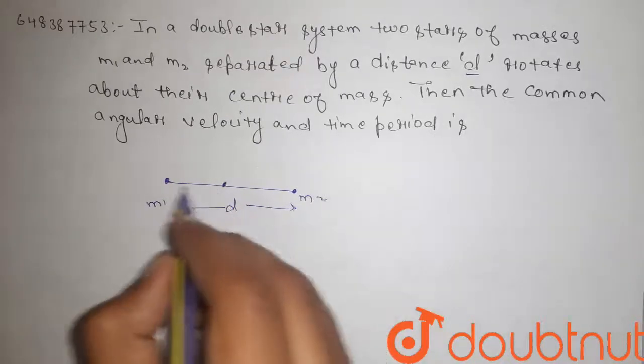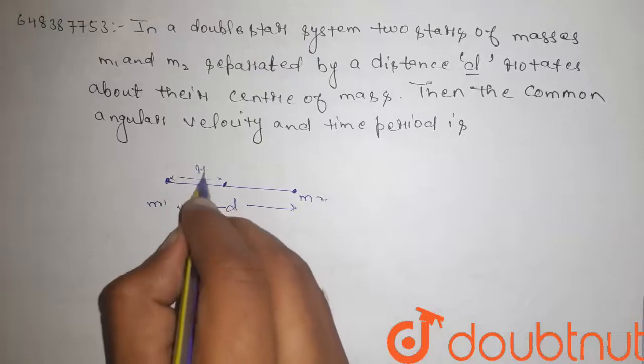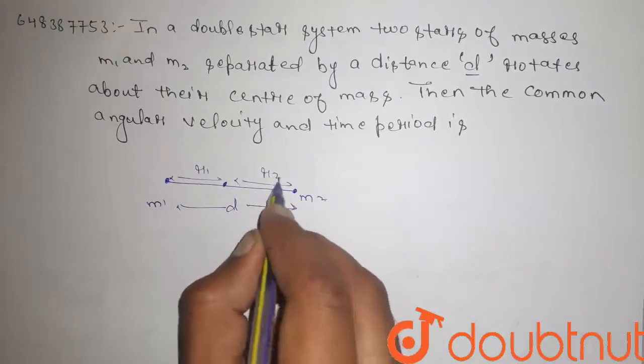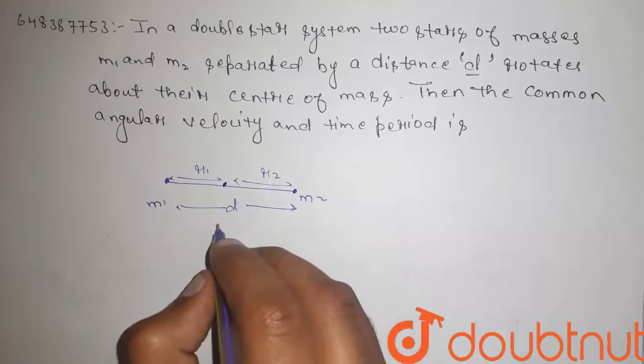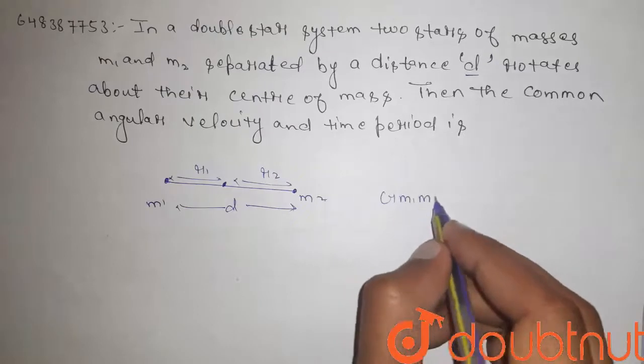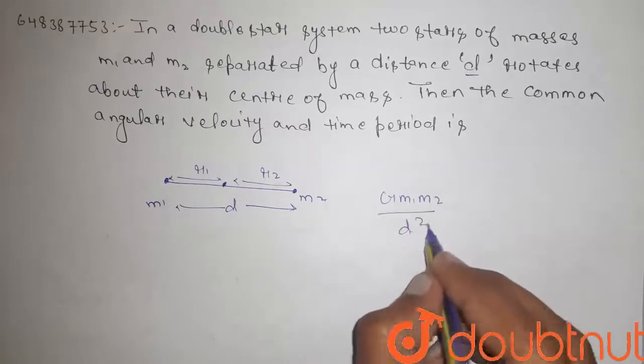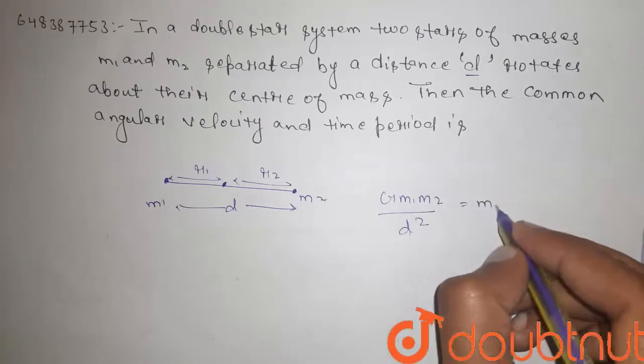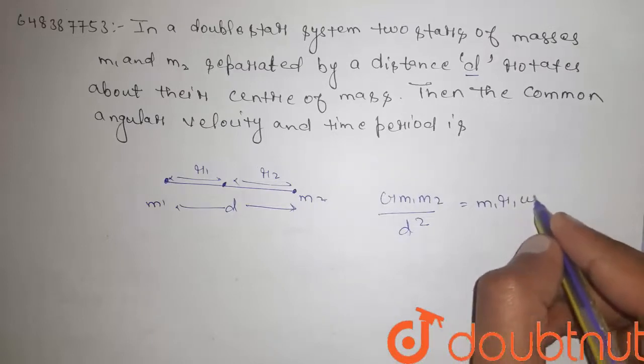Here is the center of mass. r1 is this distance, this is distance r2. So the gravitational force between the masses provides the necessary centripetal force. That is G m1 m2 divided by d square equals m1 r1 omega square. This is equation 1.